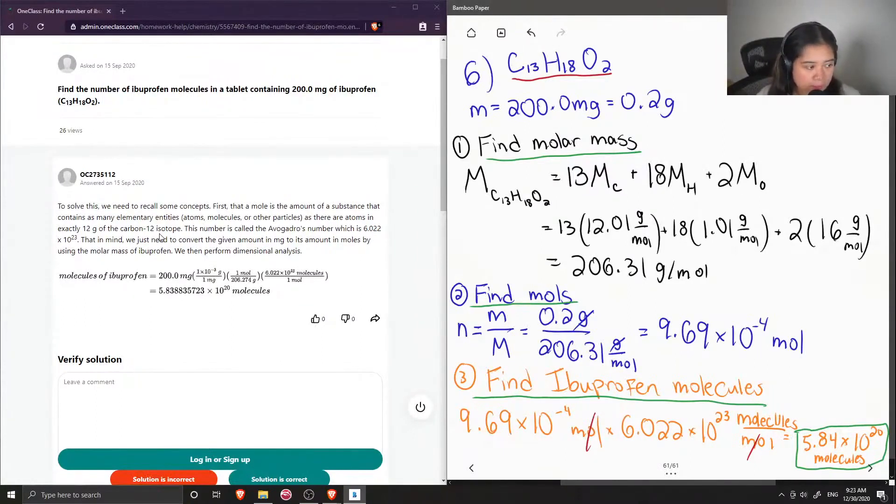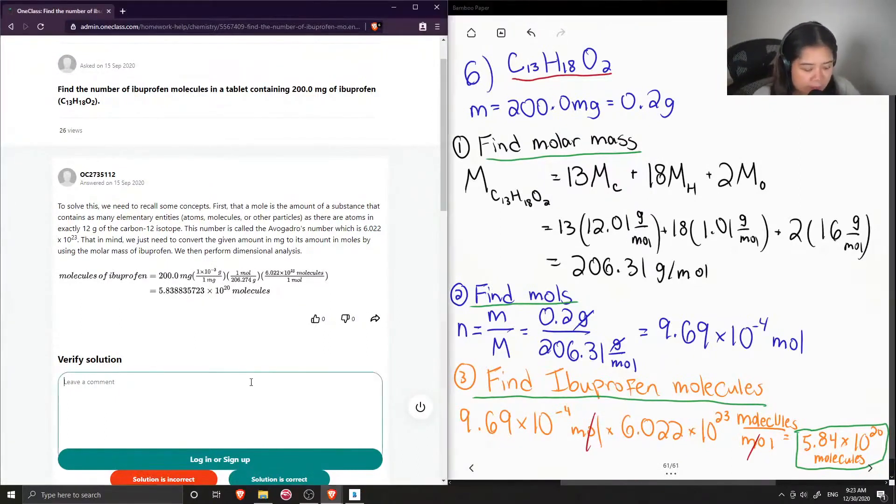So they showed it all in one line. So starting from 200 milligrams, they converted it to grams, and then divided by the molar mass of ibuprofen, and then multiplied by Avogadro's number, and then got 5.838835. Pretty much the same thing. So this solution is correct.